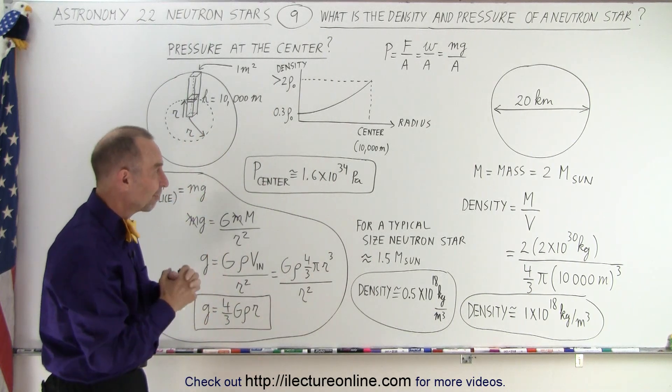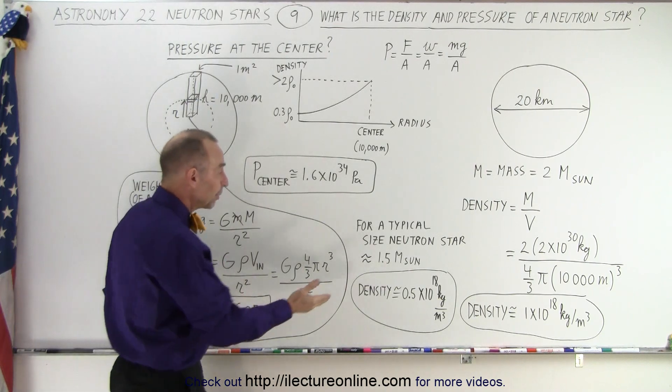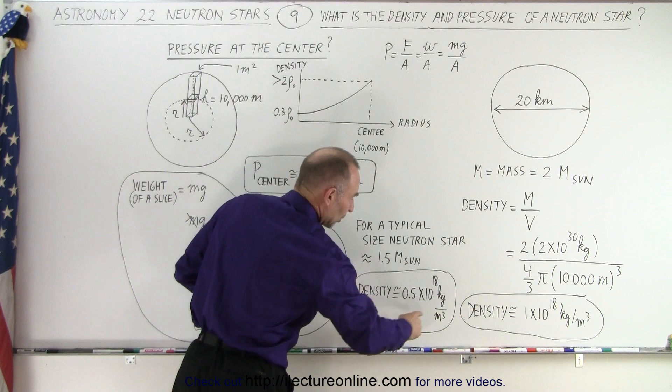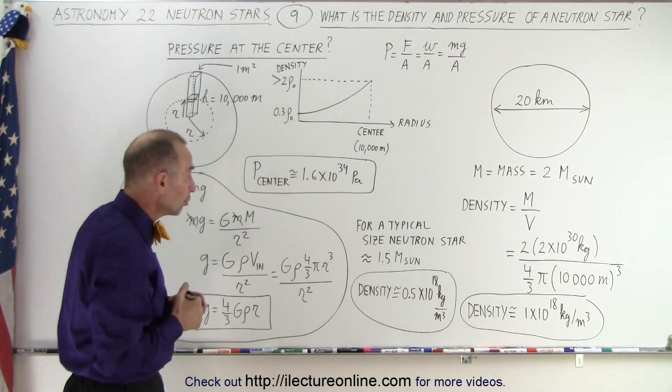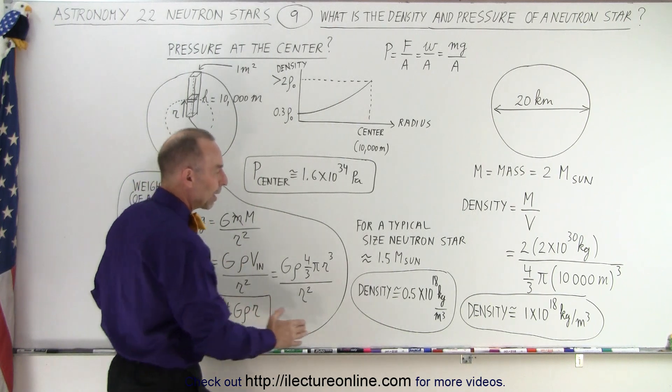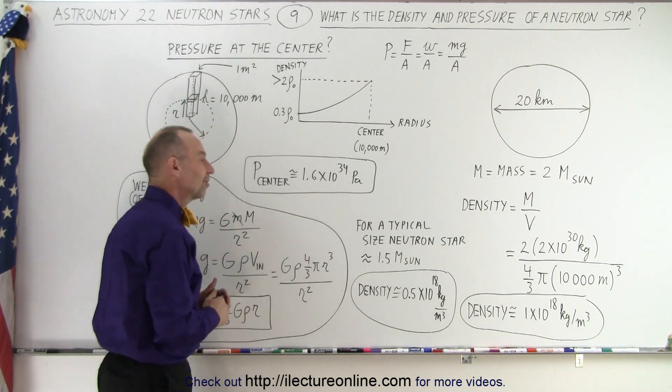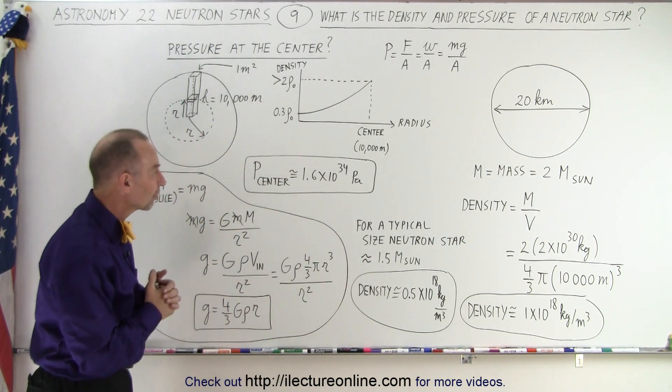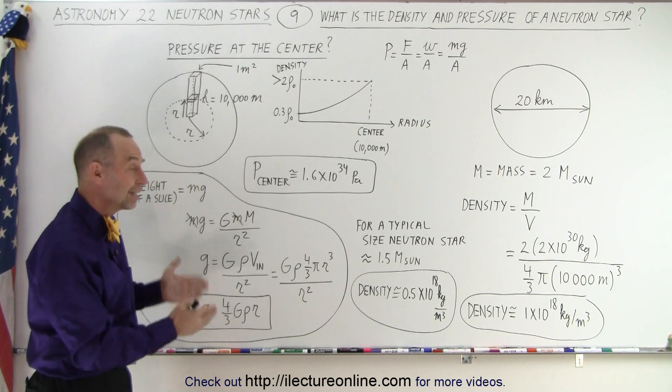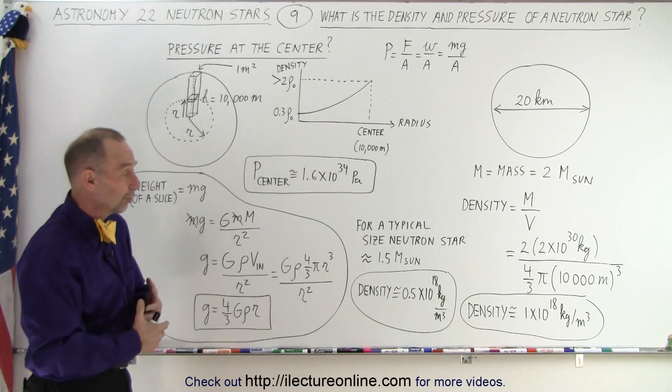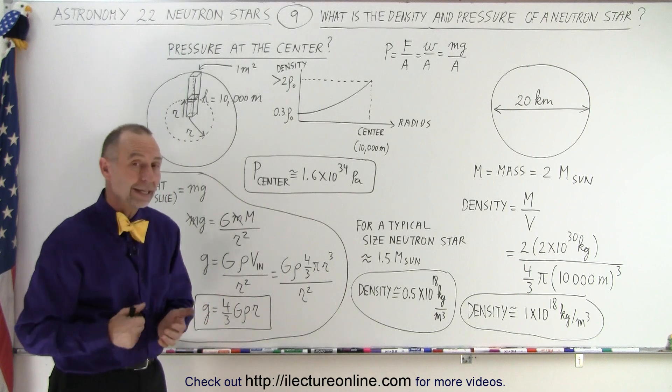these enormous pressures at the very center of the neutron star. So the average density of a typical neutron star is more like about half the number we calculated here because of the change in the density throughout the neutron star. So it averages out to be about 0.5 times 10 to the 18 kilograms per cubic meter, with the pressure at the very center almost at the limit of what neutrons can withstand, 1.6 times 10 to the 34 Pascal. And so that gives you an idea again that inside neutron stars, there are enormous densities and enormous pressures at work. And that is the way it's calculated.